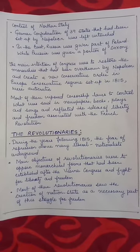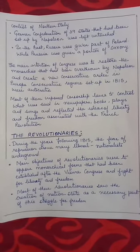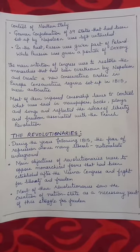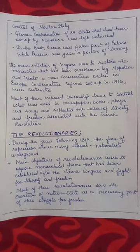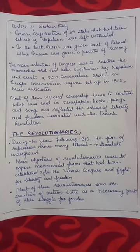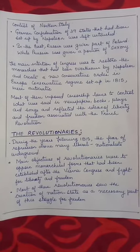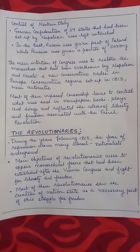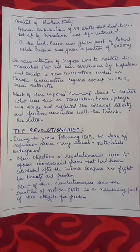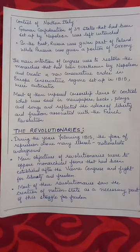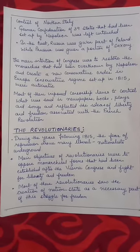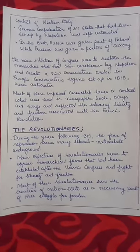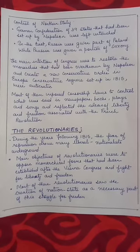Now we come to the revolutionaries. During the years following 1815, the fear of repression drove many liberal nationalists underground. The main objectives of the revolutionaries were to oppose the monarchical form of government established after the Vienna Congress and to fight for liberty and freedom. Most of these revolutionaries saw the creation of a nation-state as a necessary part of the struggle for freedom.